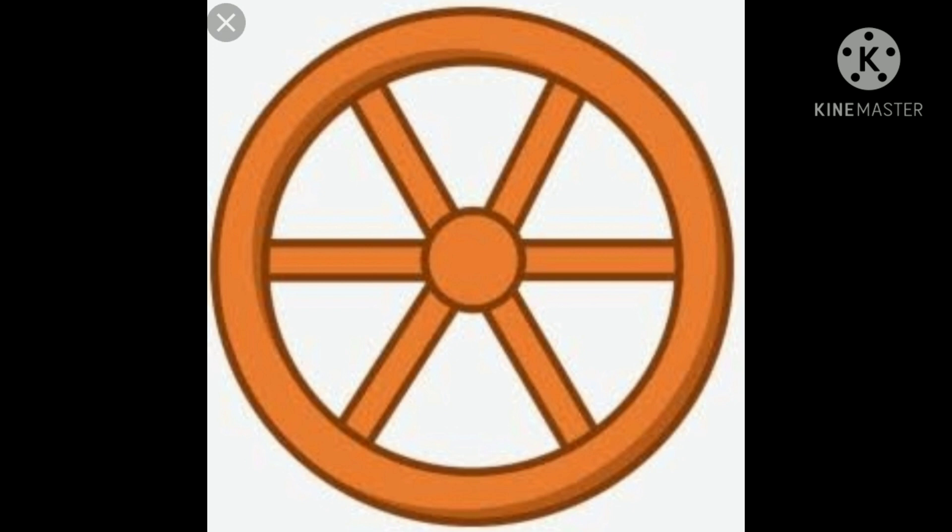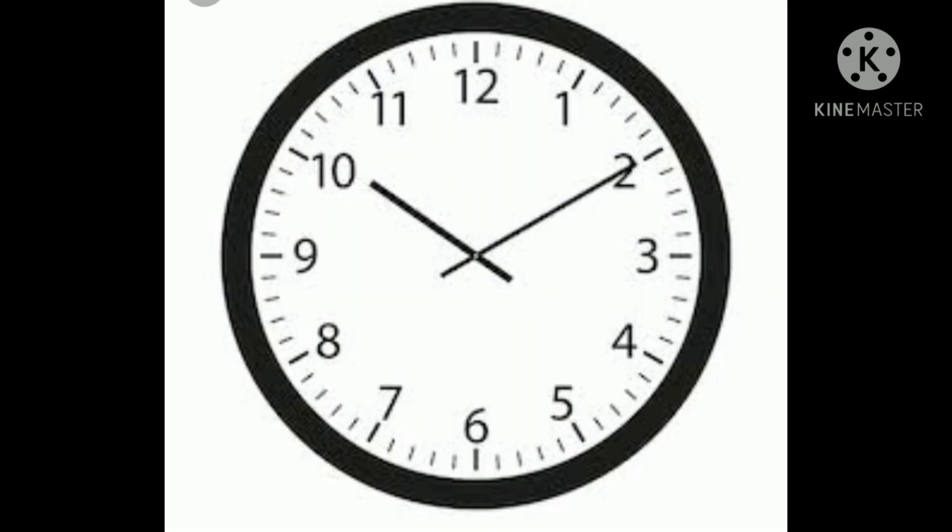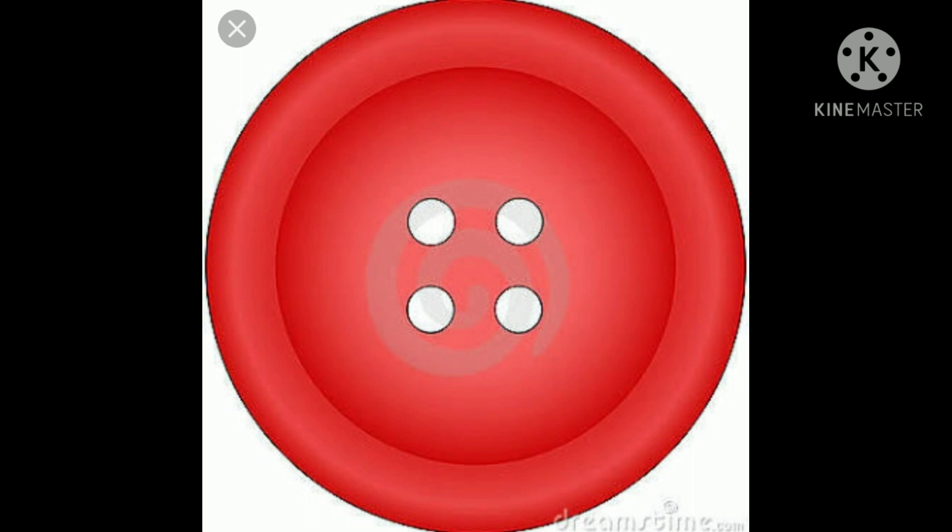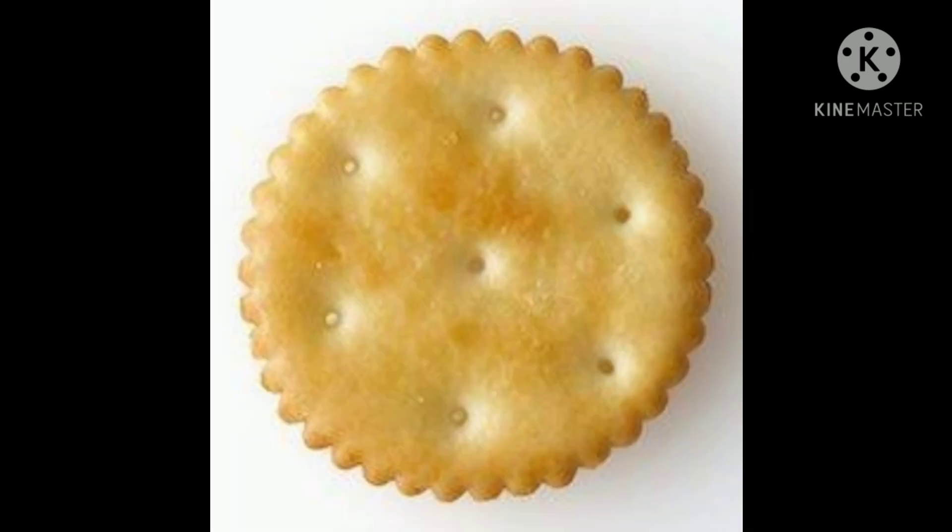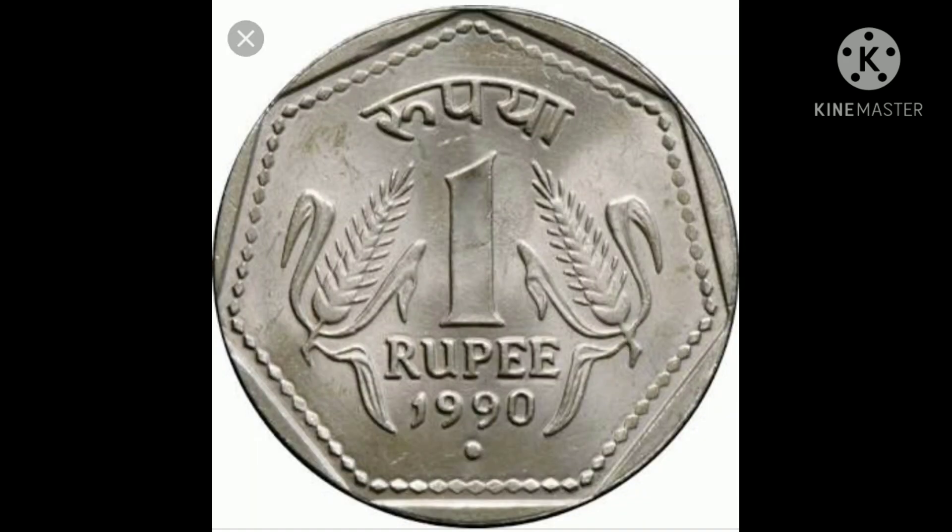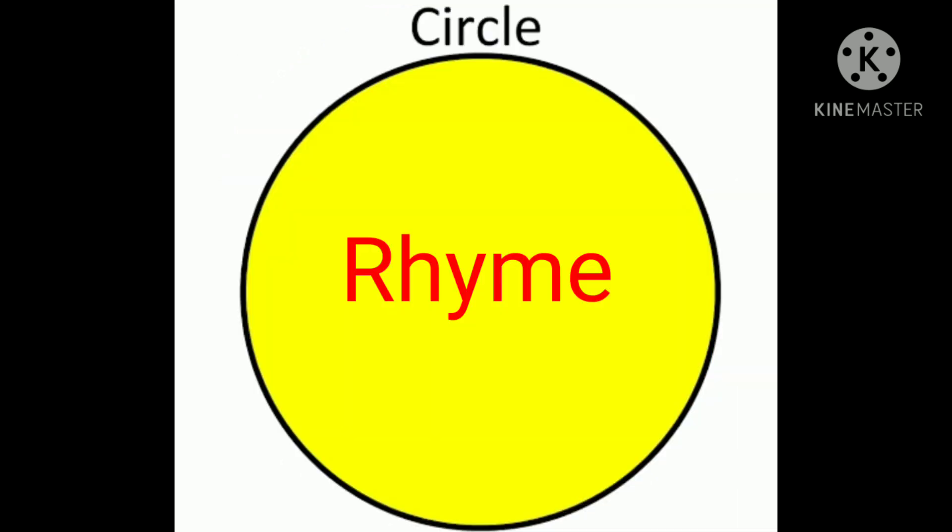Now, first picture is wheel, clock, button, biscuits and coin.